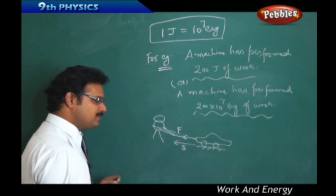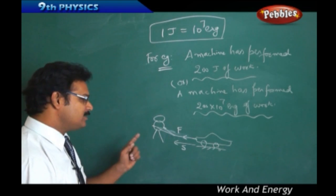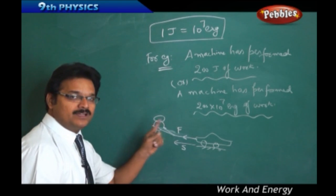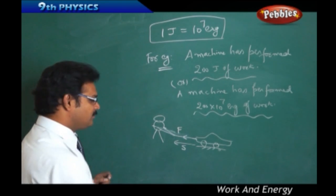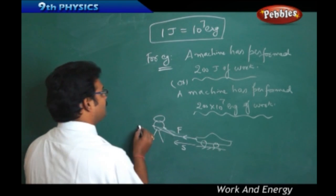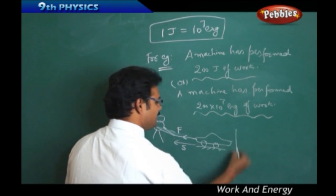So, this is, we can say, work is done by the person on the car. Because, force and displacement are both in the same direction. This is one example. Let's take a second example.